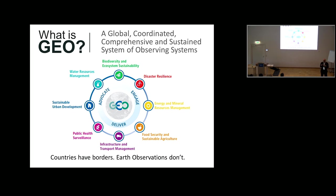GEO has just undergone a major restructuring. Created in 2005 and celebrating its 10th anniversary last year, it now has eight new society benefit areas. GeoBON sits within 'Biodiversity and Ecosystem Sustainability.' One nice outcome of this restructuring is that biodiversity and ecosystems, previously treated separately, are now together — which makes much more sense to many of us.